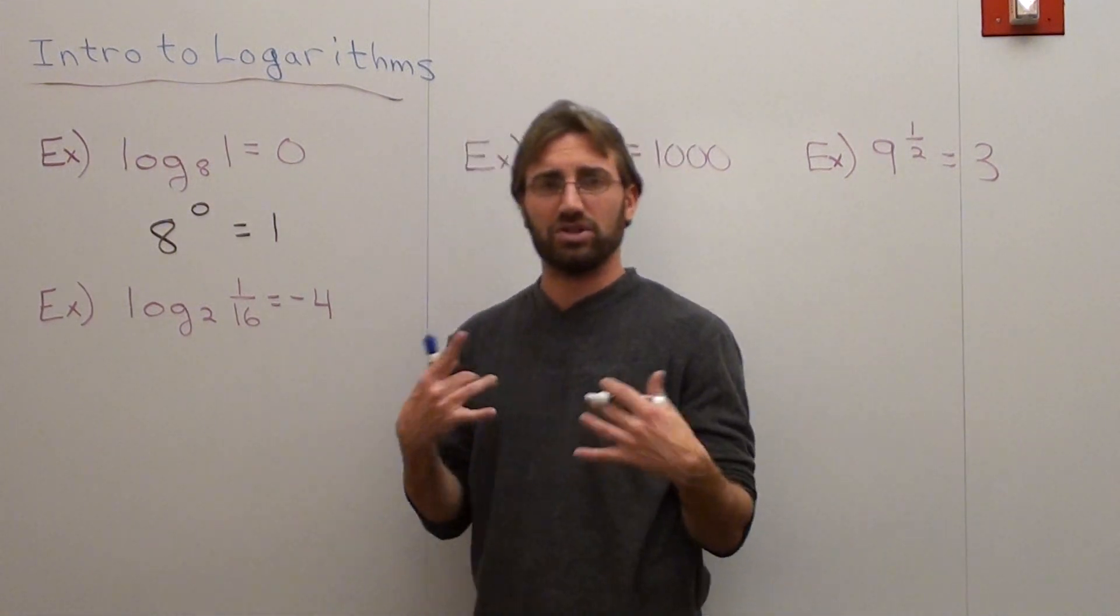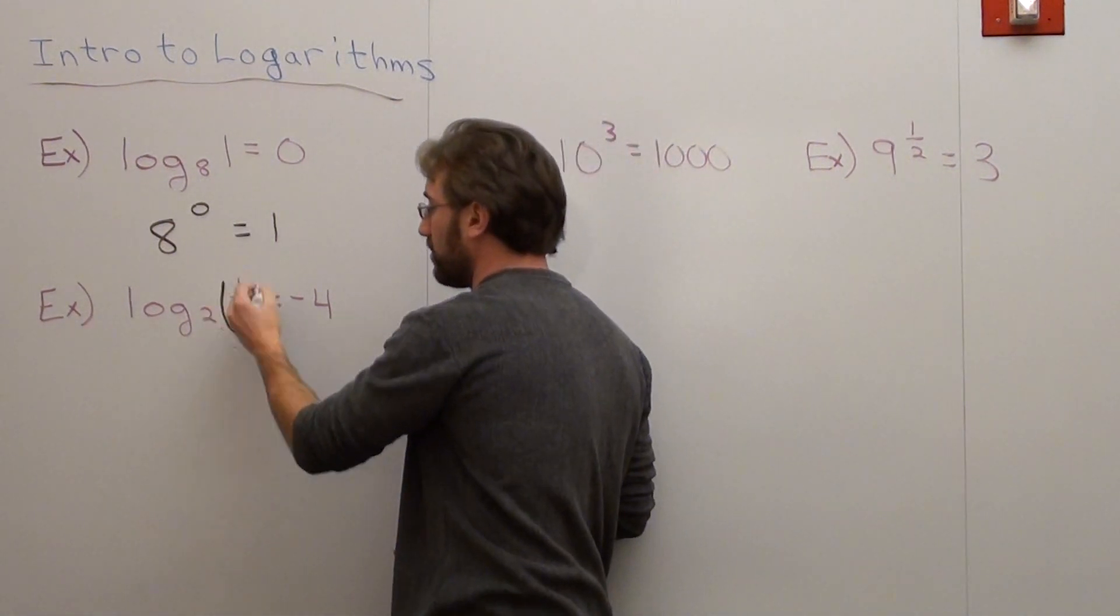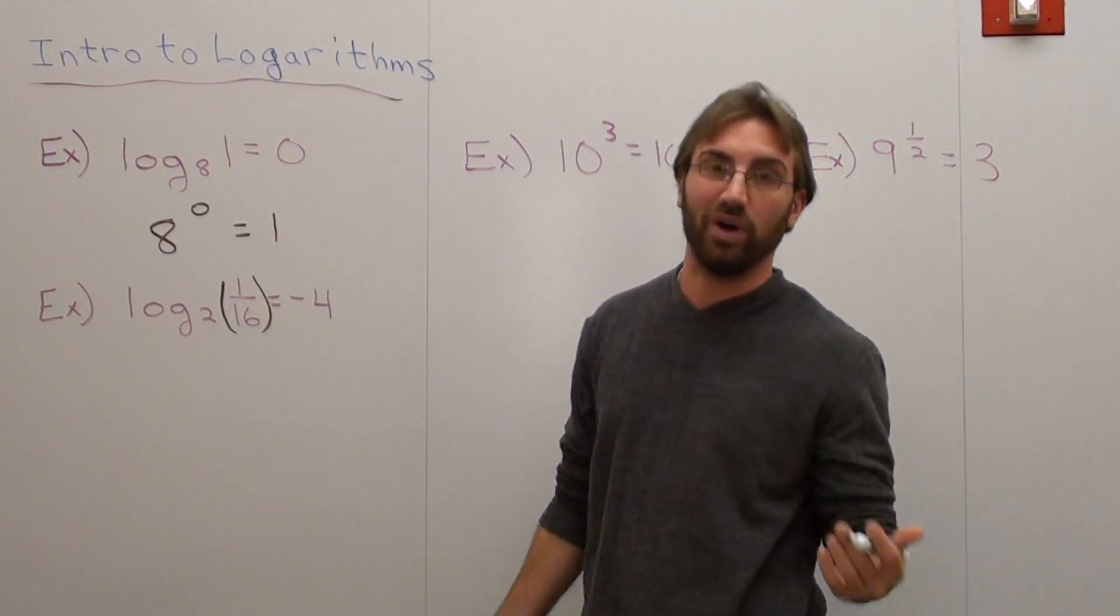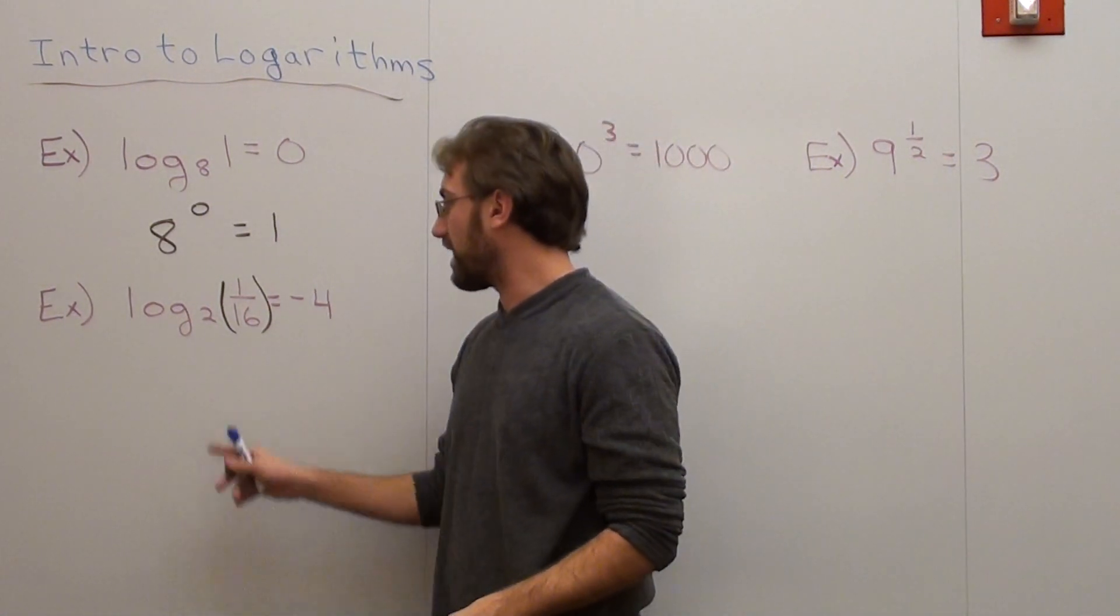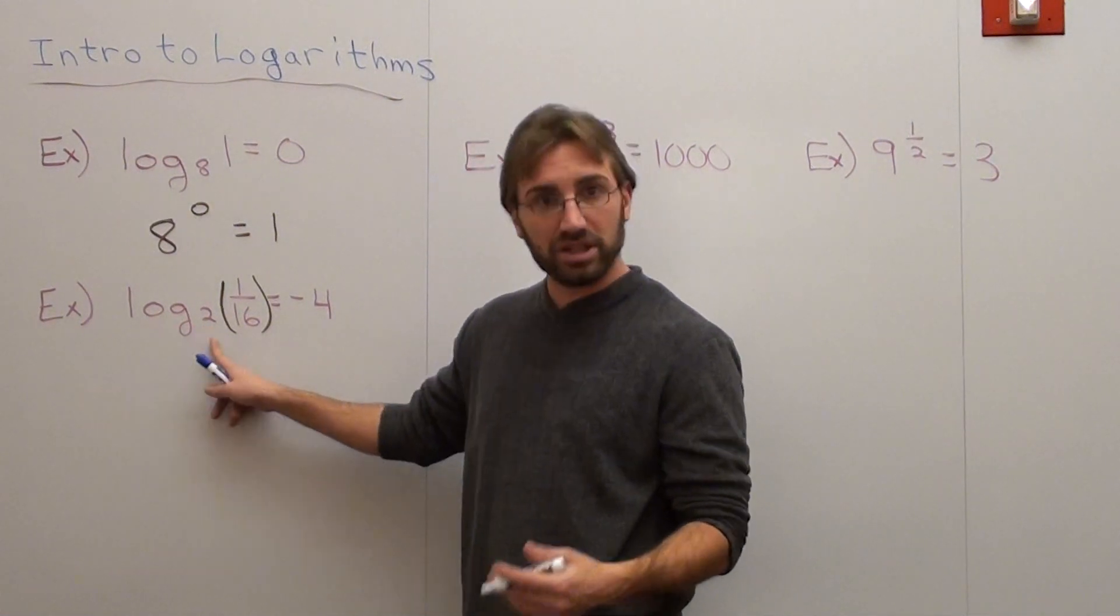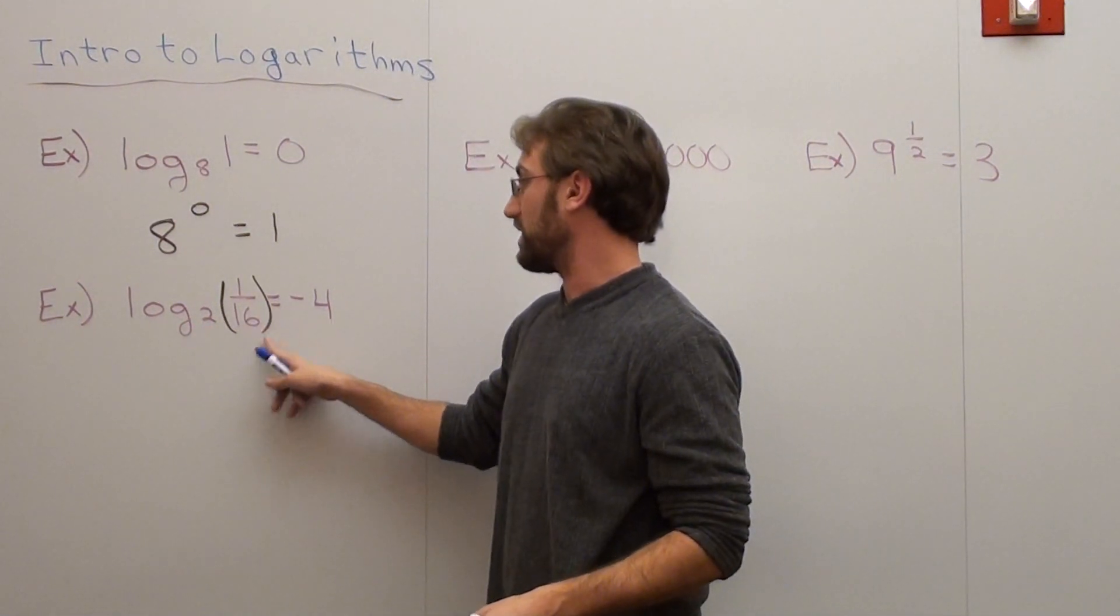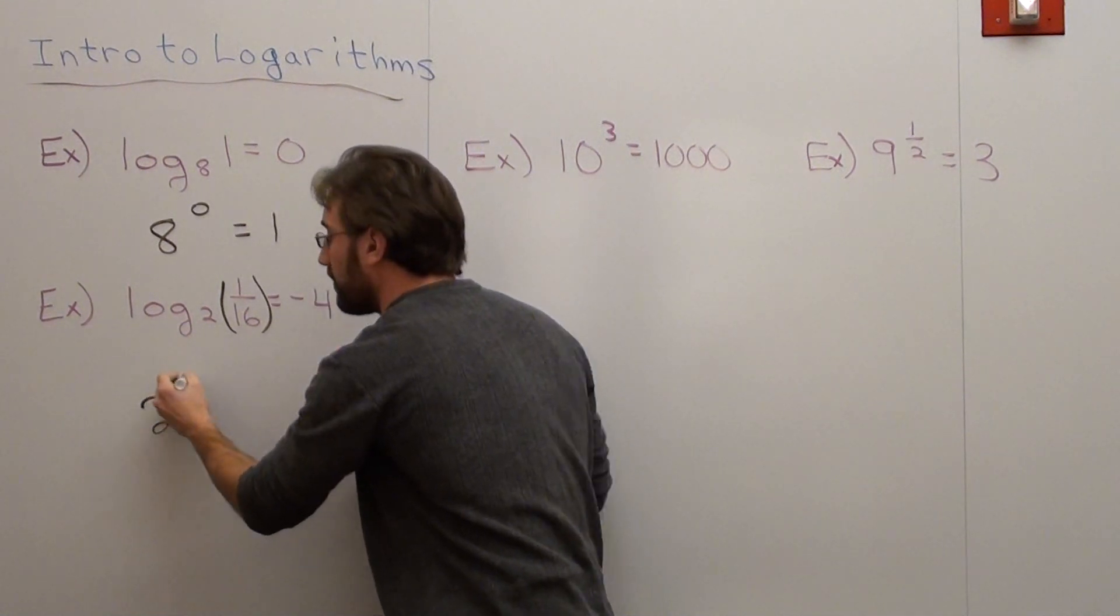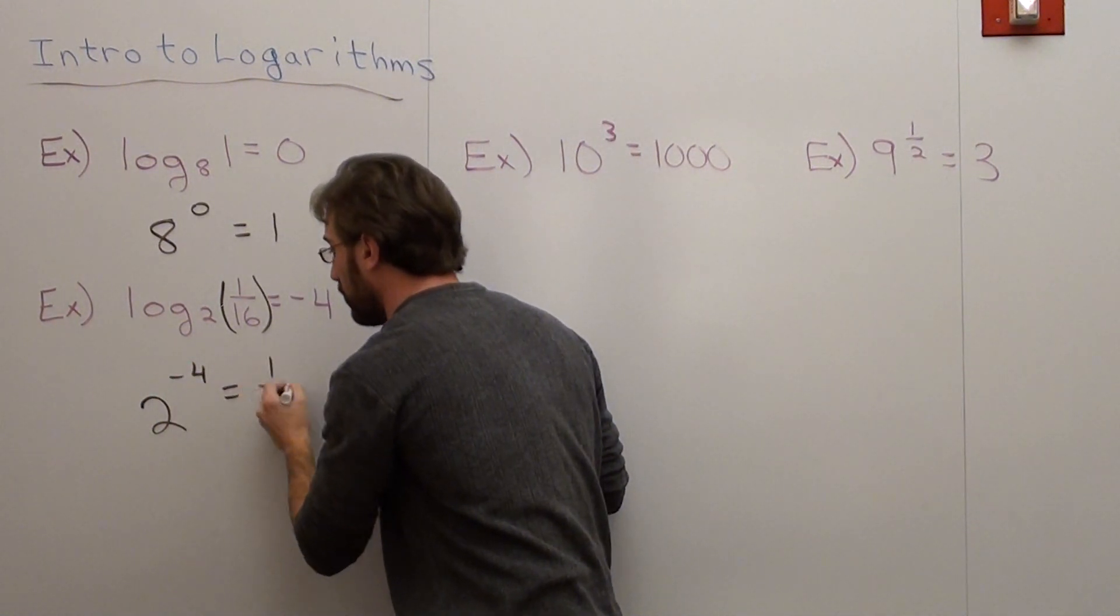On this one, I'd like to tell my students to be careful. I'd like to tell them to put a parentheses when you've got a fraction like that. It just seems to make it easier. And in this case, the base is 2. It reads log base 2 of 1 over 16 equals negative 4. So that's 2 to the power of negative 4 equals 1 over 16.